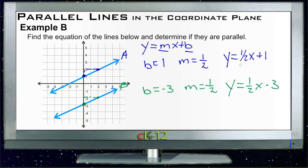There's our two equations. Since the slopes of the two lines are equal, they are parallel, which we could also note by putting that little triangle in the middle of the lines showing that they're parallel.